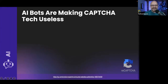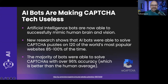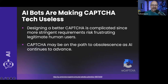AI bots are now smart enough to make CAPTCHA technology essentially useless. A new study showed AI bots were able to solve CAPTCHA puzzles on 120 of the world's most popular websites 85 to 100 percent of the time — with most bots solving CAPTCHAs at over 96% accuracy, which is better than humans. Designing a better CAPTCHA is complicated because making it harder frustrates real users. CAPTCHA, many say, is on the path to obsolescence.